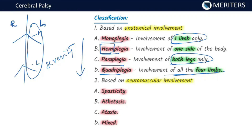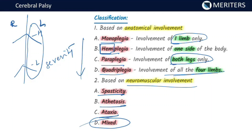Based on the neuromuscular involvement, cerebral palsy is classified as spasticity, athetosis, ataxia, and mixed variety — a combination of these. This classification is more important. Spasticity, athetosis, ataxia, and mixed variety.